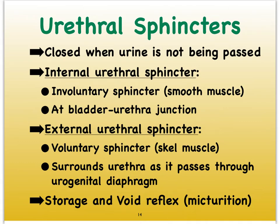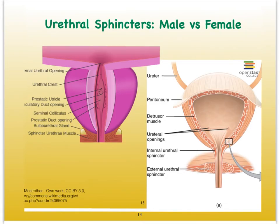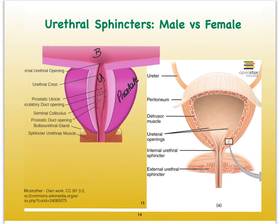Both sphincters are closed when we're storing urine. The locations of both sphincter muscles are the same in males and females — just more separated. In the male, the urethra runs right through the prostate and continues into the penis. The internal urethral sphincter is at the junction of the bladder with the urethra, while the external urethral sphincter is located just before the urethra leaves the body via the penis.